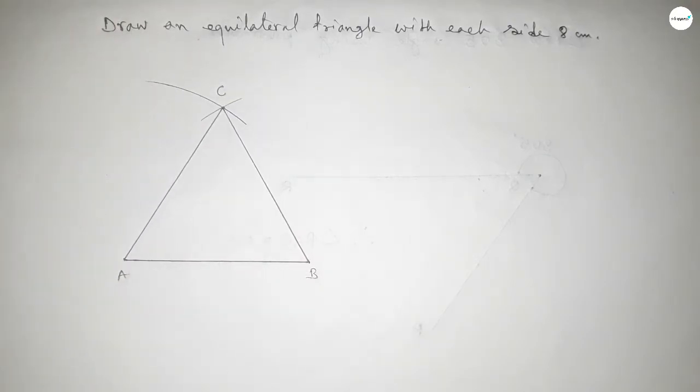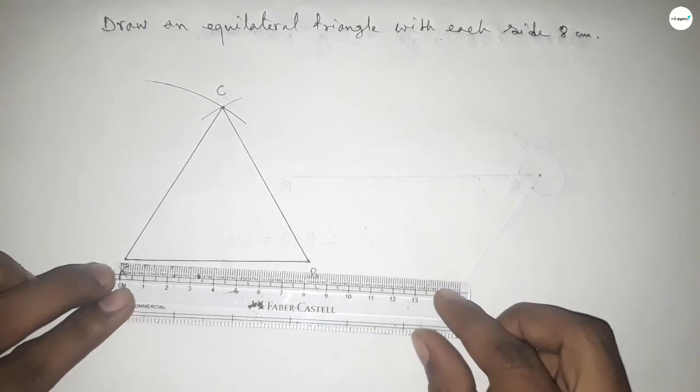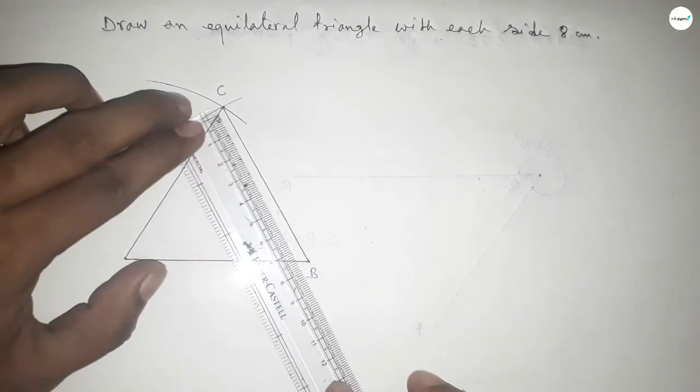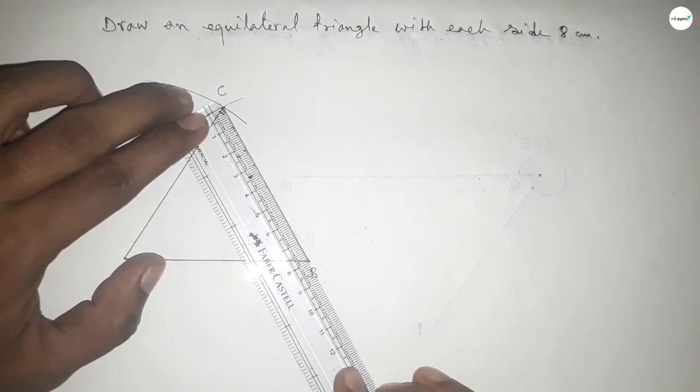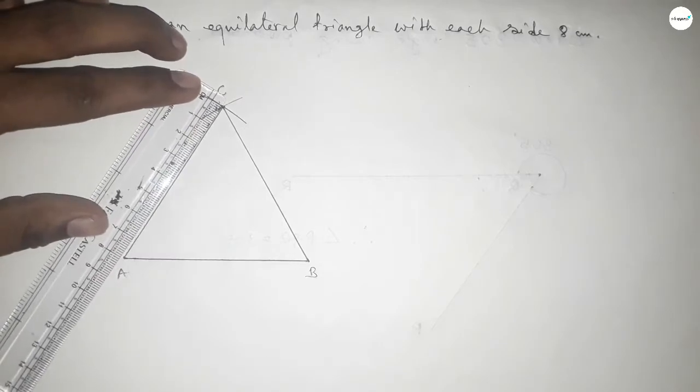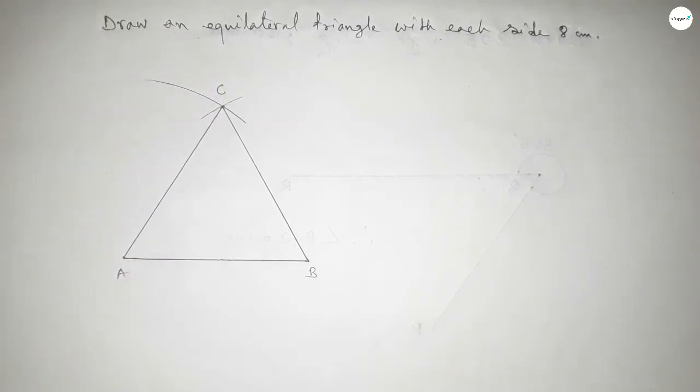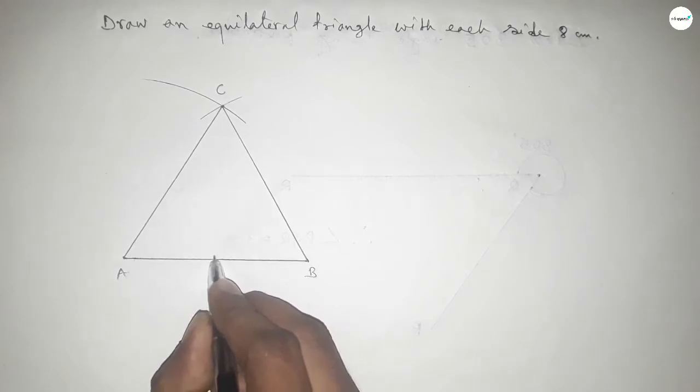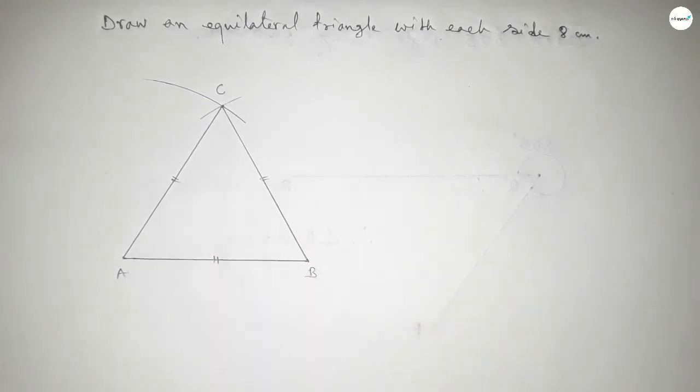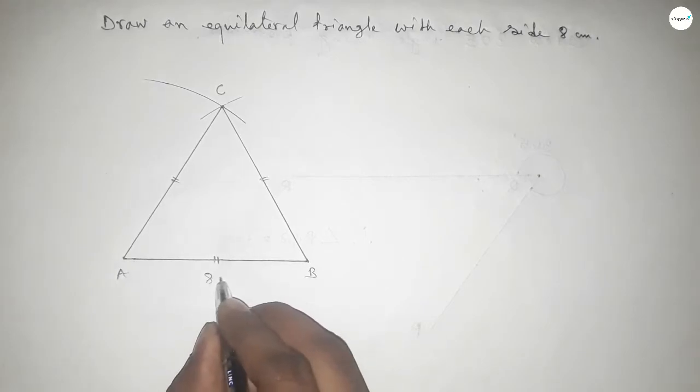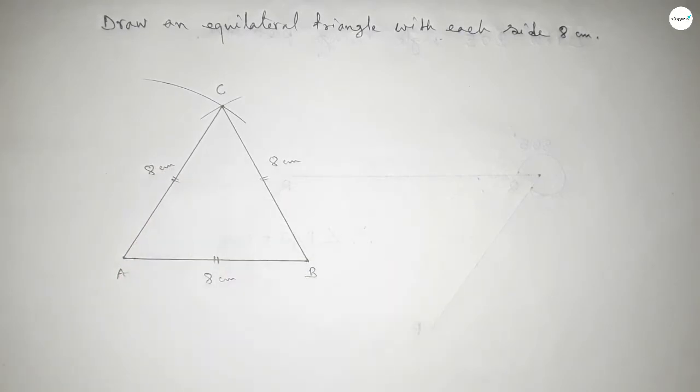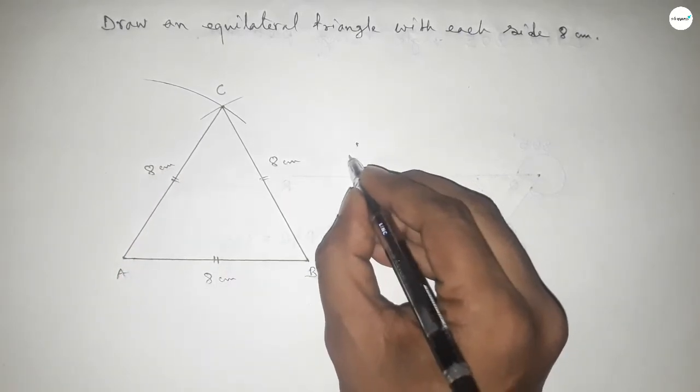Now checking all the sides are equal or not. So this is 8 centimeter, this is 8 centimeter, and checking this side, so this is 8 centimeter also. So now mark the equal sign on 3 sides. This side 8 centimeter, and this side 8 centimeter, and this side also 8 centimeter.